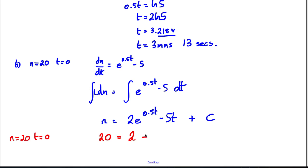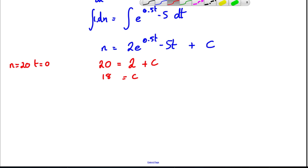So it's telling me that c is clearly equal to 18. Therefore, my solution to the differential equation is n equals 2e to the 0.5t minus 5t plus 18.